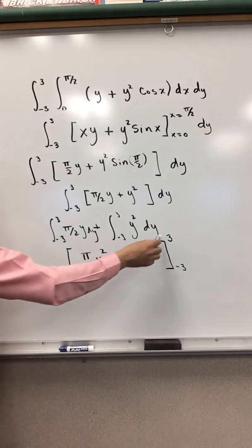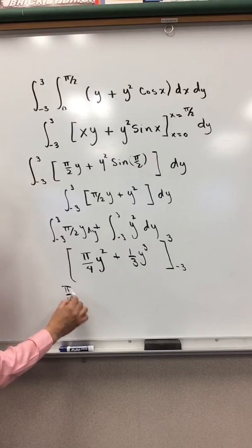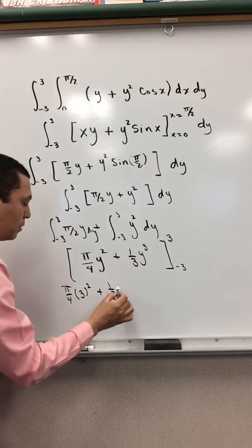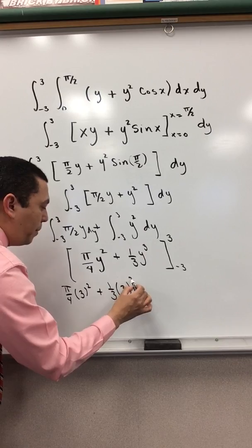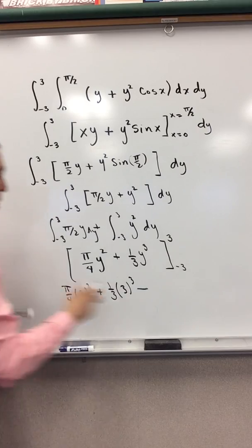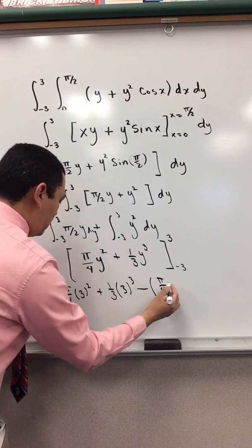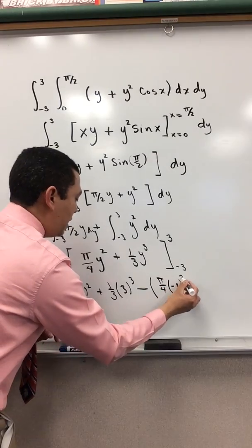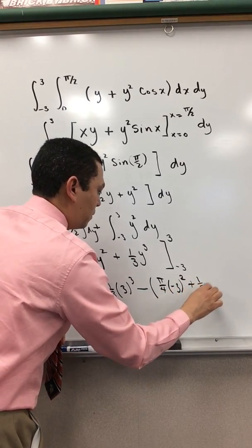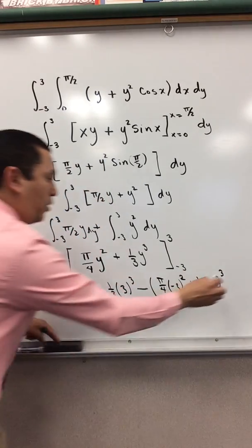Applying the Fundamental Theorem of Calculus again, for the upper limit we have π/4·(3²) plus (1/3)·(3³). Then minus the lower limit: π/4·(−3)² plus (1/3)·(−3)³.